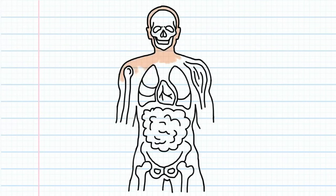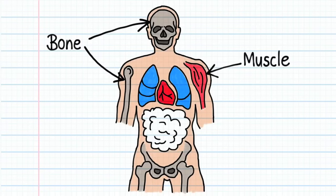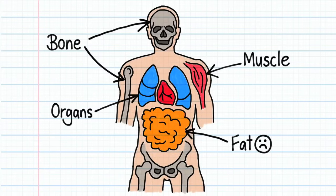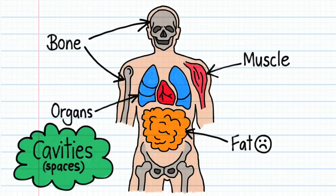If you poke and prod at your abdomen, you might be tempted to think that your body is a solid mass of bone, muscle, organs, and tragically for some of us, fat. But it turns out that our bodies actually contain many important spaces or cavities.